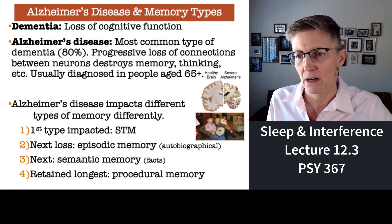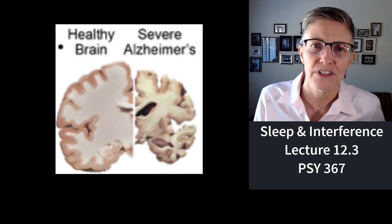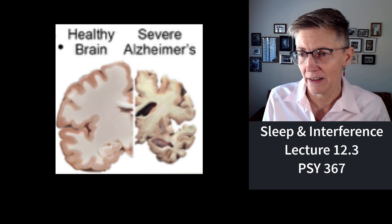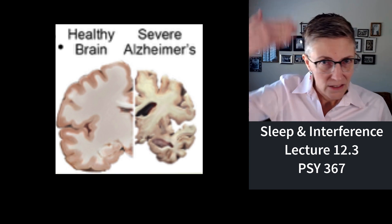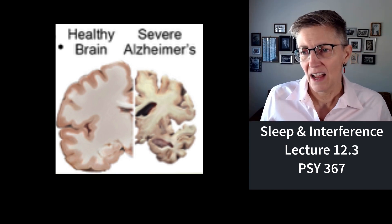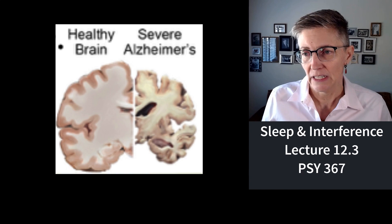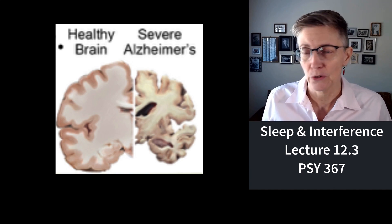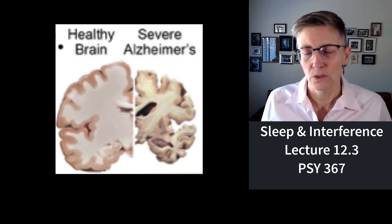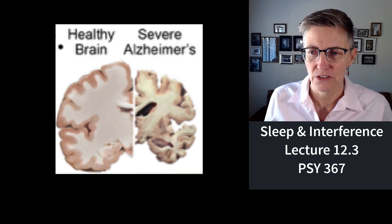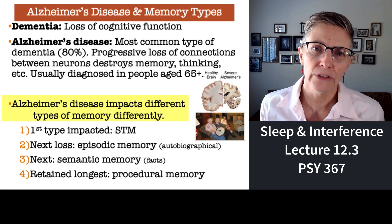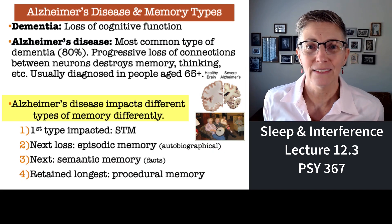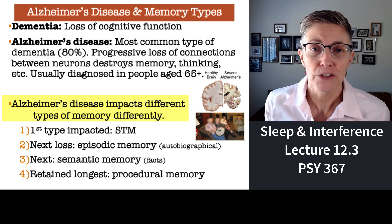I've got a picture here: on the left side you can see a healthy brain, and on the right is a photograph of a hemisphere of a human brain in someone who had severe Alzheimer's disease. The loss of neurons in Alzheimer's disease is obvious. It turns out that in Alzheimer's disease, different types of memory last different amounts of time.